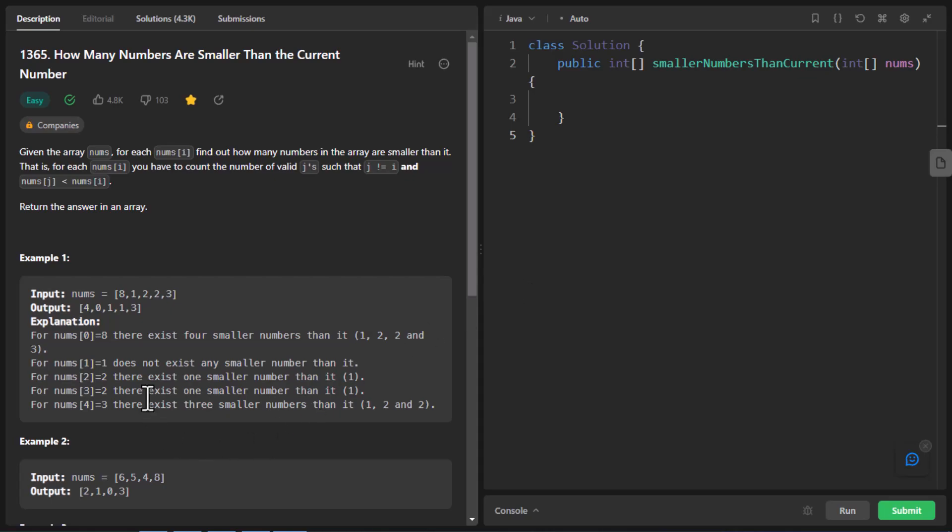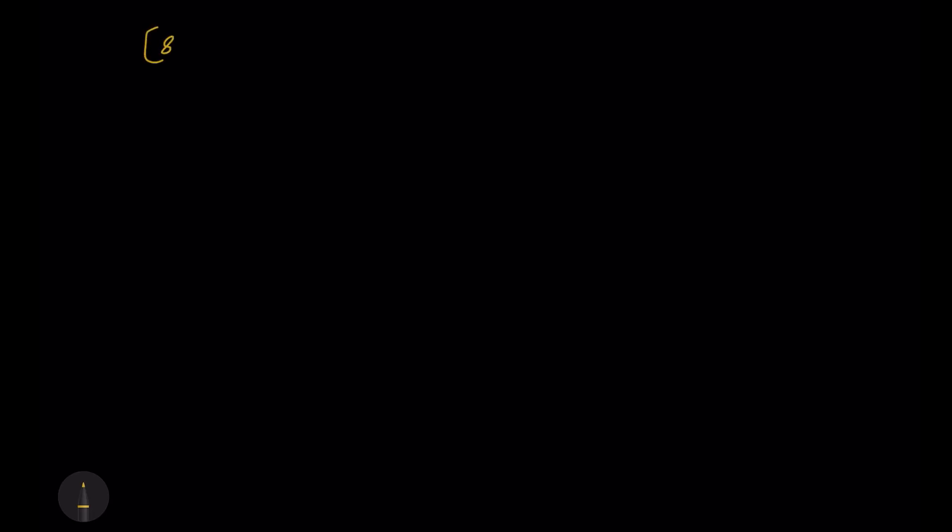So we are given certain examples with the problem. We'll first understand how this particular output was generated. So the first input that is given to us is 8, 1, 2, 2 and 3.